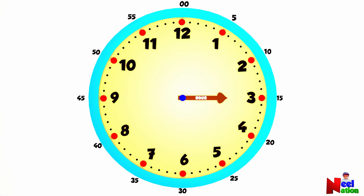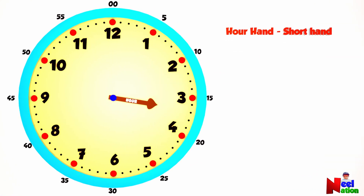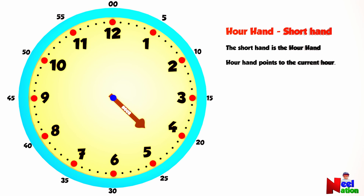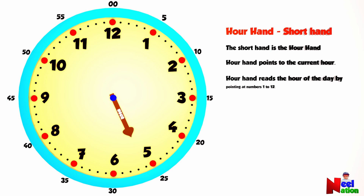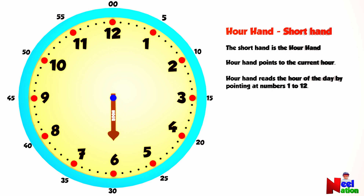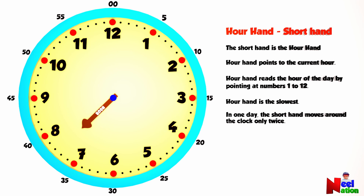For now let's just focus on the hour hand. The short hand is the hour hand. The hour hand shows the current hour of the day and reads the hour by pointing at numbers from 1 to 12. The hour hand is the slowest — in a day, it moves around the clock only twice.